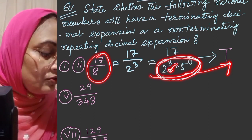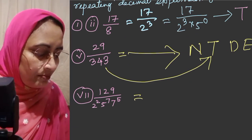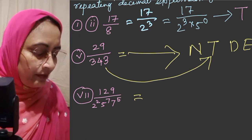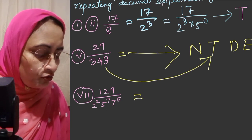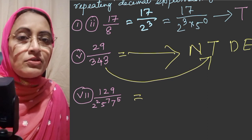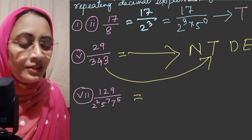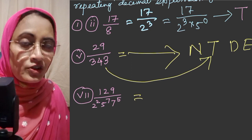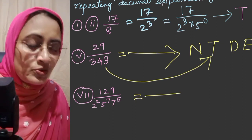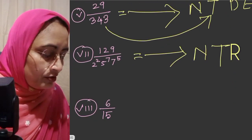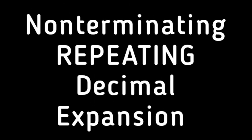Next: 129 by 2 squared into 5 to the power 7 into 7 to the power 5. For this to be terminating, the 7 to the power 5 in the denominator would need to cancel out — meaning 129 must be divisible by 7 to the power 5. But 129 is not divisible by 7, so it is not divisible by 7 to the power 5 either. Therefore the denominator cannot be written as 2 to the power m into 5 to the power n — it does not have a terminating decimal expansion. It has a non-terminating repeating decimal expansion.